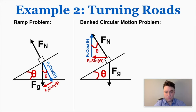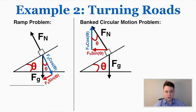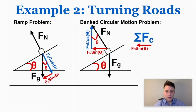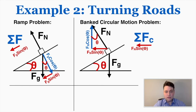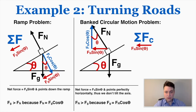This is notably different from a standard ramp problem. In a banked circular motion problem, the centripetal force points perfectly horizontally, whereas in a ramp problem the net force normally points down or up the ramp at an angle. Also, in a banked circular motion problem the purely vertical forces cancel each other out. Another notable difference: in a ramp problem the force of gravity is greater than the normal force, whereas in a banked circular motion problem the normal force is greater than the force of gravity, because gravity equals just one component of the normal force.